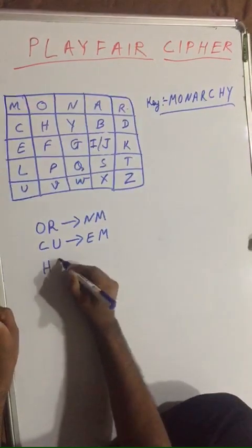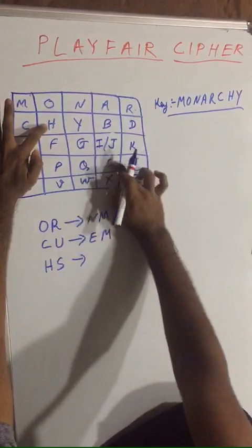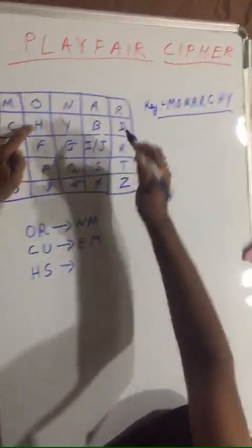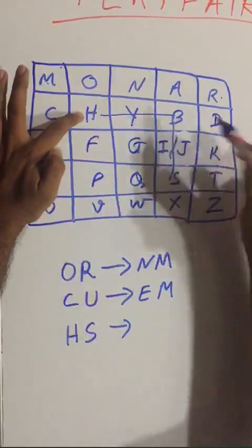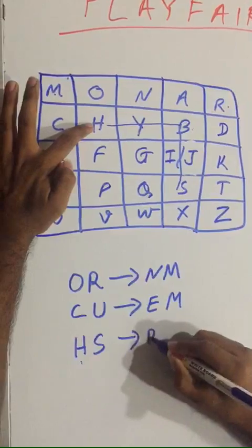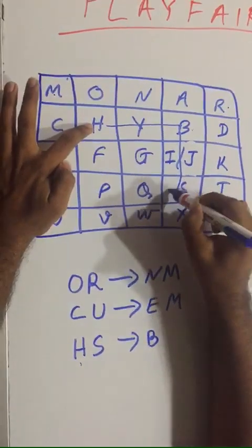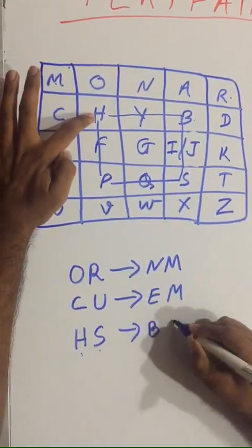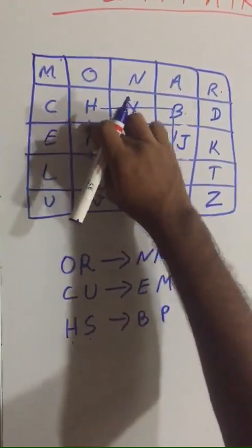Rule number six: if you are given the pair H and S to encrypt, first find H and S in the matrix. H is here, S is here — they are not in the same row or the same column. In this case you check the rectangle correspondence. For H, the corresponding value is B; for S, the corresponding value is P. So the encryption of HS is BP.